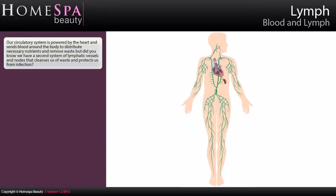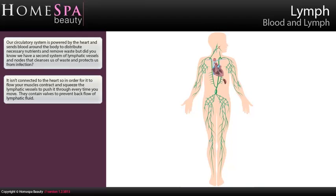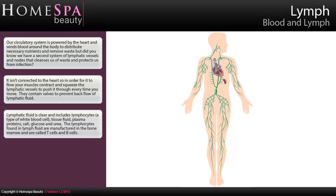Lymph. Our circulatory system is powered by the heart and sends blood around the body to distribute necessary nutrients and remove waste. But we also have a second system of lymphatic vessels and nodes that cleanses us of waste and protects us from infection. It isn't connected to the heart, so in order for it to flow, your muscles contract and squeeze the lymphatic vessels to push it through every time you move. They contain valves to prevent backflow of lymphatic fluid. Lymphatic fluid is clear and includes lymphocytes, a type of white blood cell, tissue fluid, plasma proteins, salt, glucose and urea.